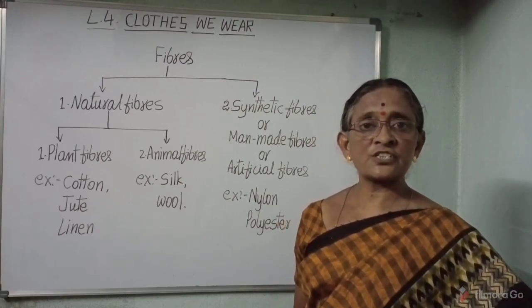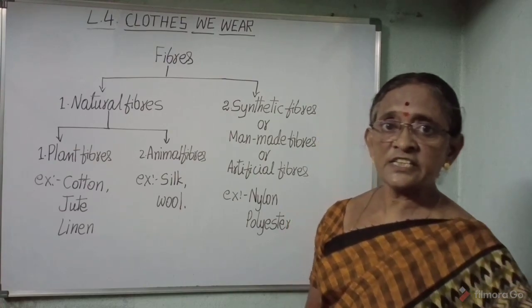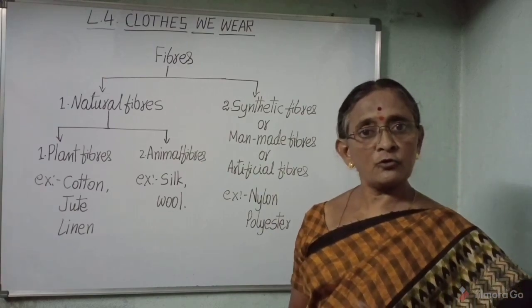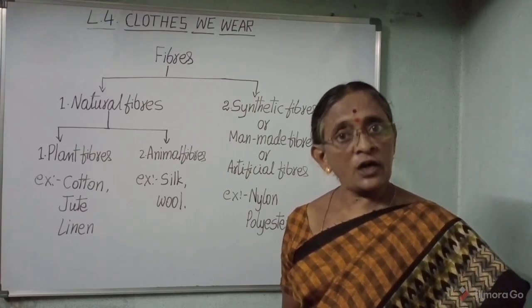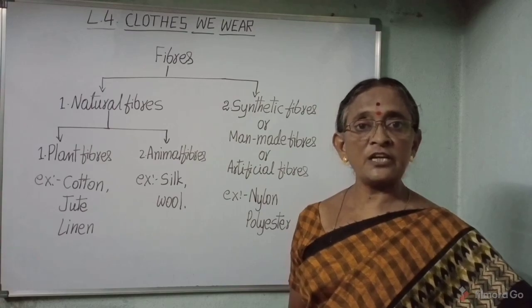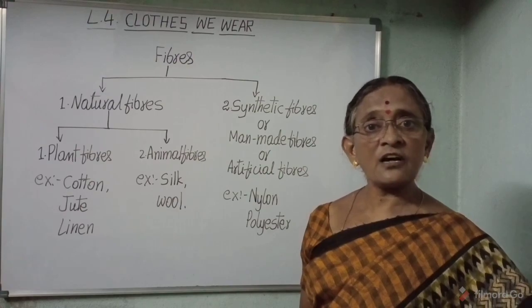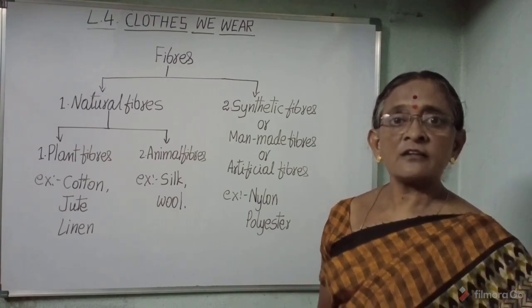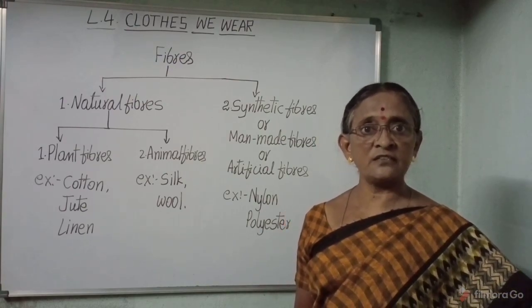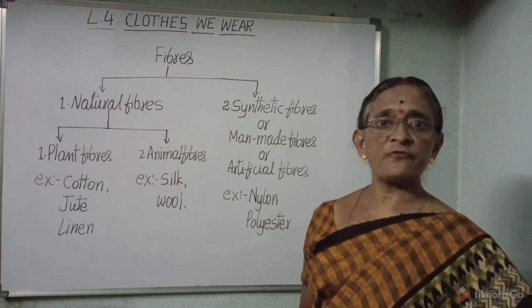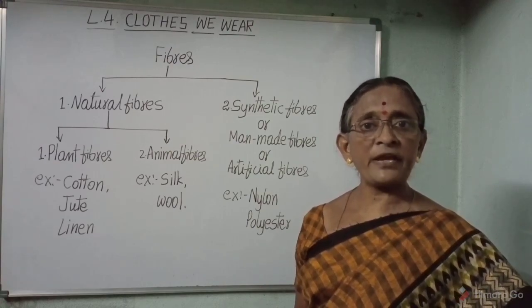But how are these clothes made up of? Clothes are made up of small threads called yarn. A yarn is further made up of very long and thin strands called fibers. Fibers are very small, long, thin threads. Fibers are obtained from plants and animals, and some types of fibers are made in factories.